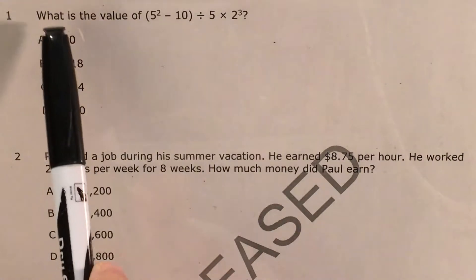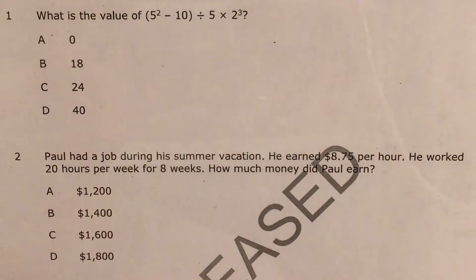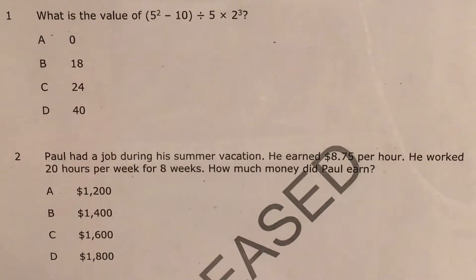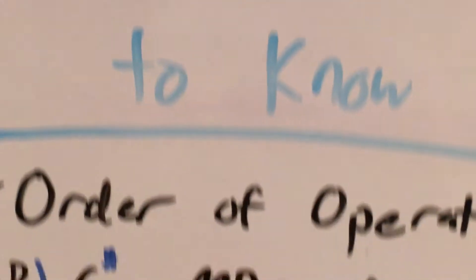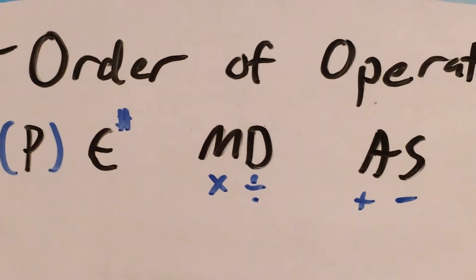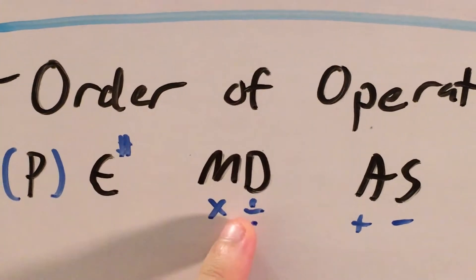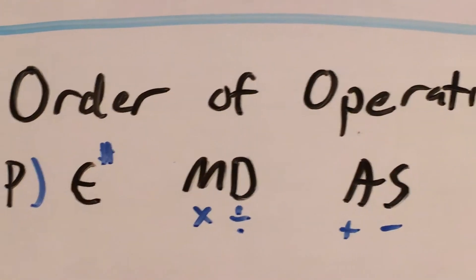We can see that the question is asking us to find the value of this long expression with parentheses, exponents, and all kinds of crazy stuff in it. So if you have been learning about math in sixth grade throughout this year, you can probably guess what this question is testing you on — it is order of operations, also known as PEMDAS: parentheses, exponents, multiplying and dividing, adding and subtracting.